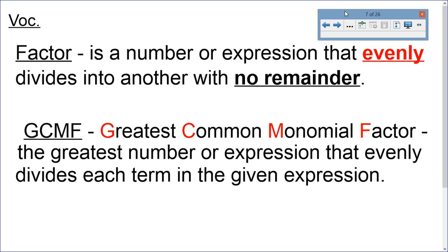Let's begin with the vocabulary. Factor is a number or expression that evenly divides into another with no remainder. So there's nothing going to be left over. GCF or GCMF is the Greatest Common Monomial Factor, also known as the Greatest Common Factor. That's the greatest number or expression that evenly divides each term in the given expression.